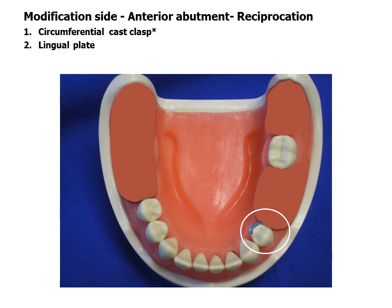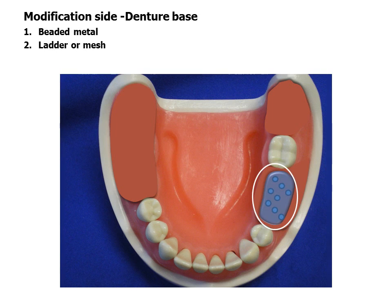Reciprocation for the anterior abutment on the modification side may consist of a lingual plate, a cast circumferential clasp, or a vertical bar minor connector. The base for the modification space will normally be metal. Metal bases are used in areas of well-healed, short-span spaces. Acrylic resin may be used if relining is anticipated.